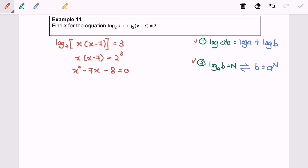Next, I'm going to factorize the equation where we will have (X minus 8)(X plus 1) equals 0. Finally, we will have our answer: X equals 8 and X equals negative 1.